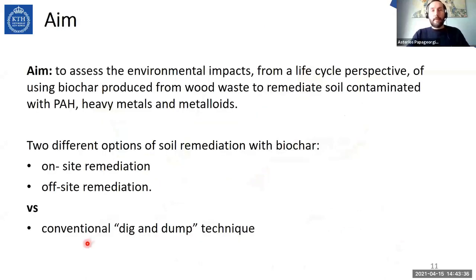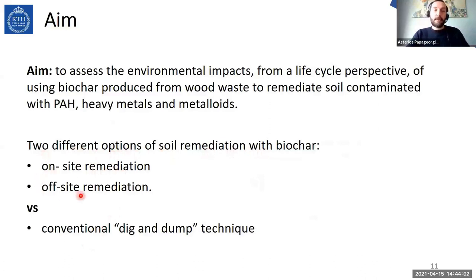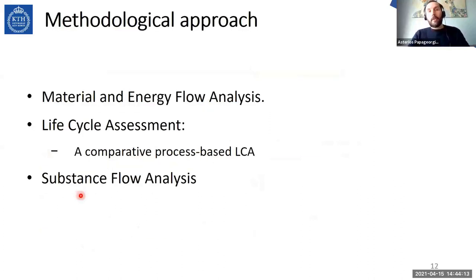The aim of our work package was to assess the environmental impacts from a life cycle perspective of using biochar produced from wood waste to remediate soil contaminated with polycyclic aromatic hydrocarbons, heavy metals, and metalloids. We assessed two different options of soil remediation with biochar — on-site remediation and off-site remediation — and compared them with the conventional dig and dump technique. To do that, we combined different industrial ecology tools: material and energy flow analysis, comparative process-based life cycle assessment, and substance flow analysis.